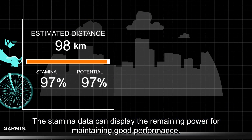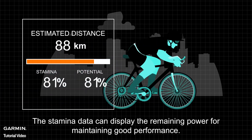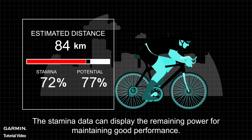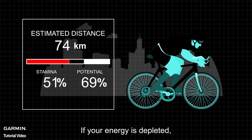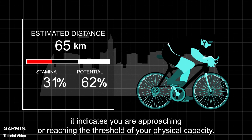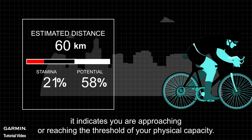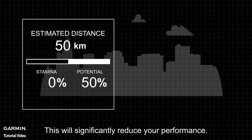The stamina data can display the remaining power for maintaining good performance. If your energy is depleted, it indicates you are approaching or reaching the threshold of your physical capacity, which will significantly reduce your performance.